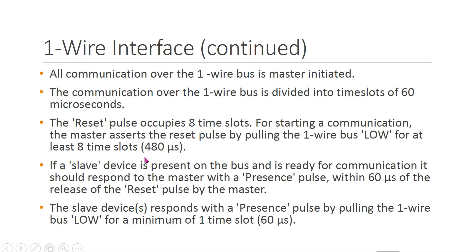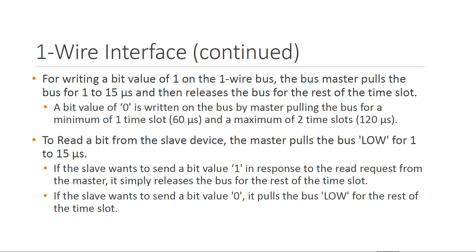The master asserts the reset pulse by pulling the One-Wire bus low for at least eight time slots, that is a minimum of 480 microseconds. If a slave device is present on the bus and is ready for communication, it should respond to the master with a presence pulse within 60 microseconds of the release of the reset pulse by the master. The slave device responds with a presence pulse by pulling the One-Wire bus low.